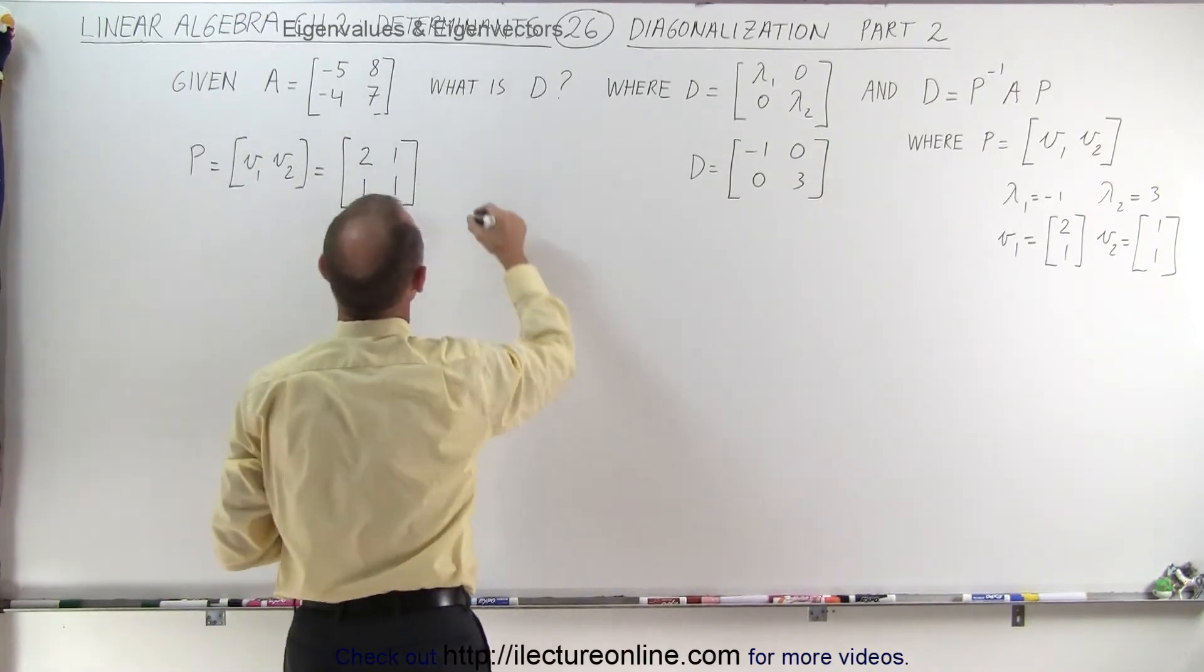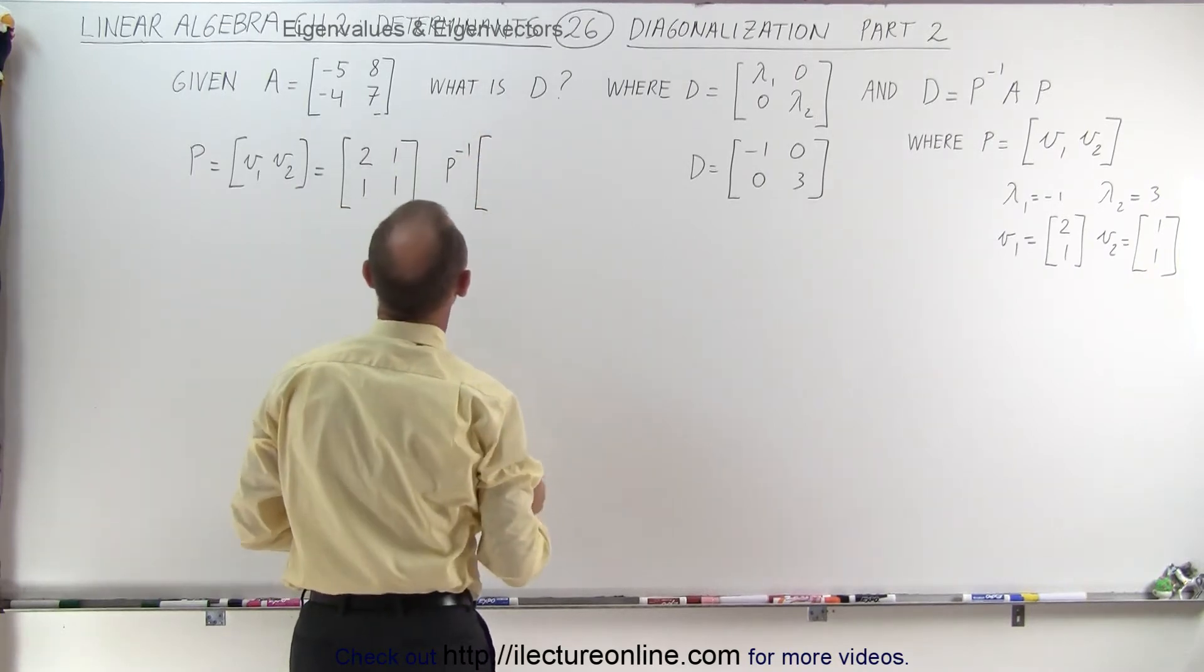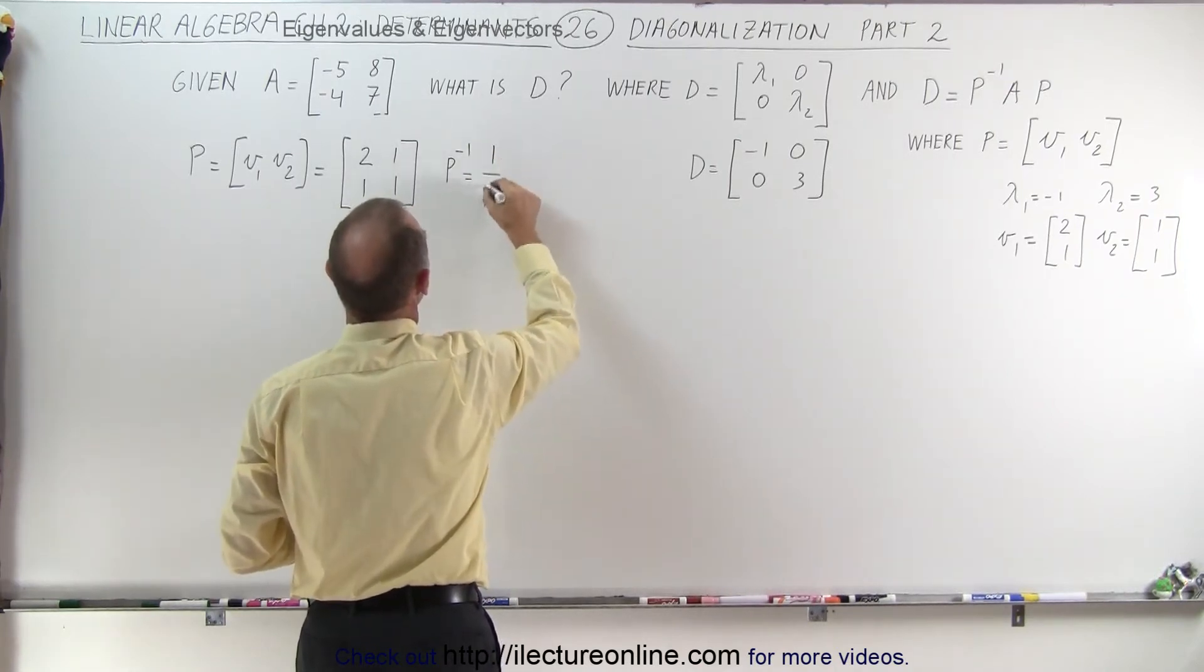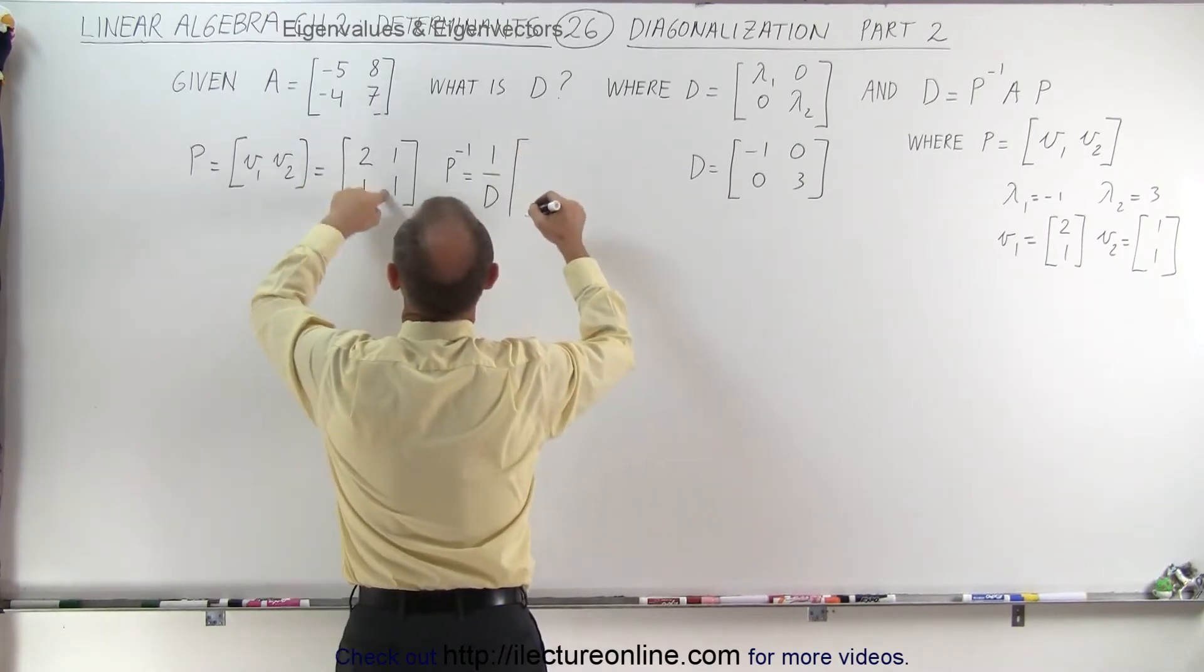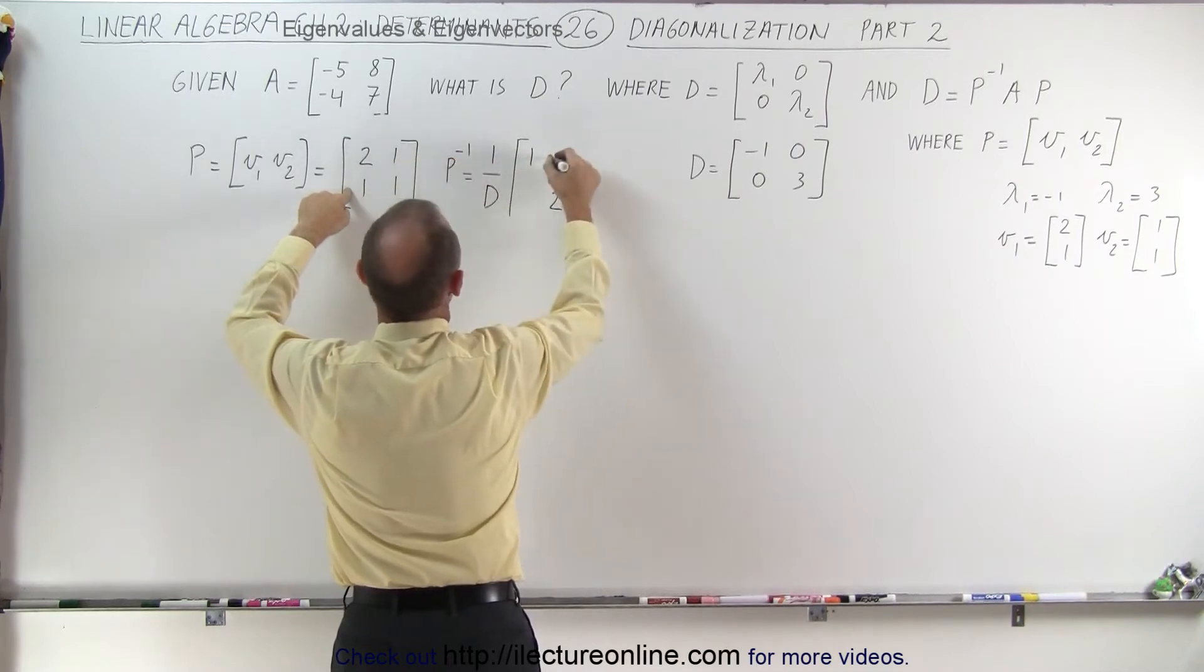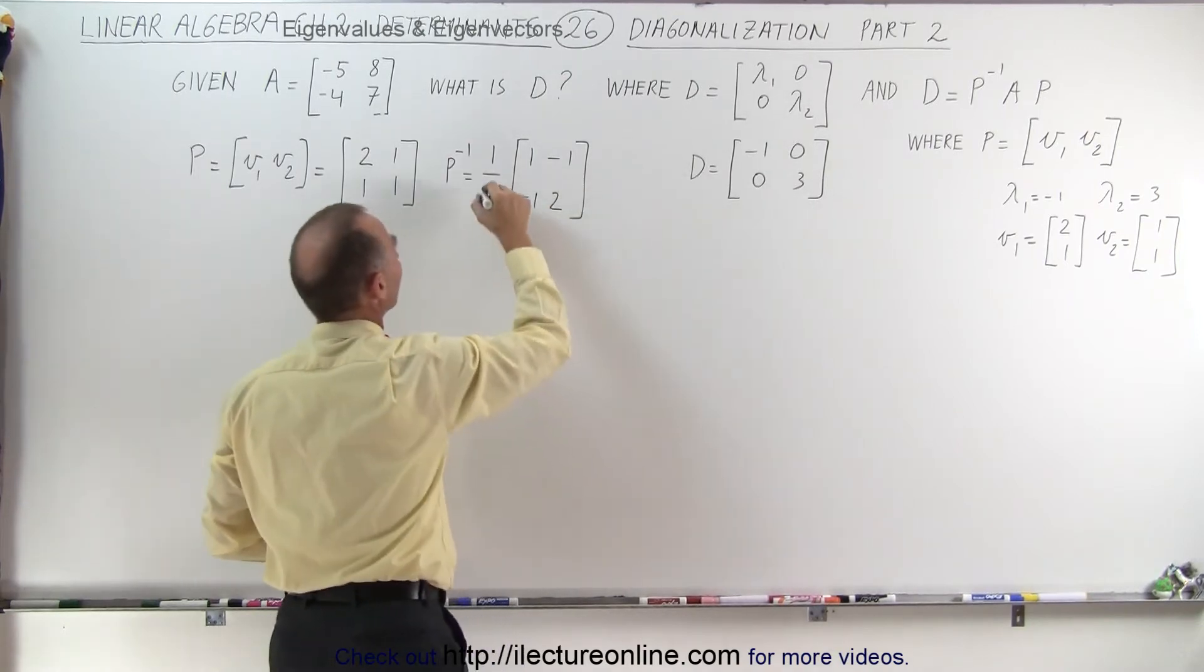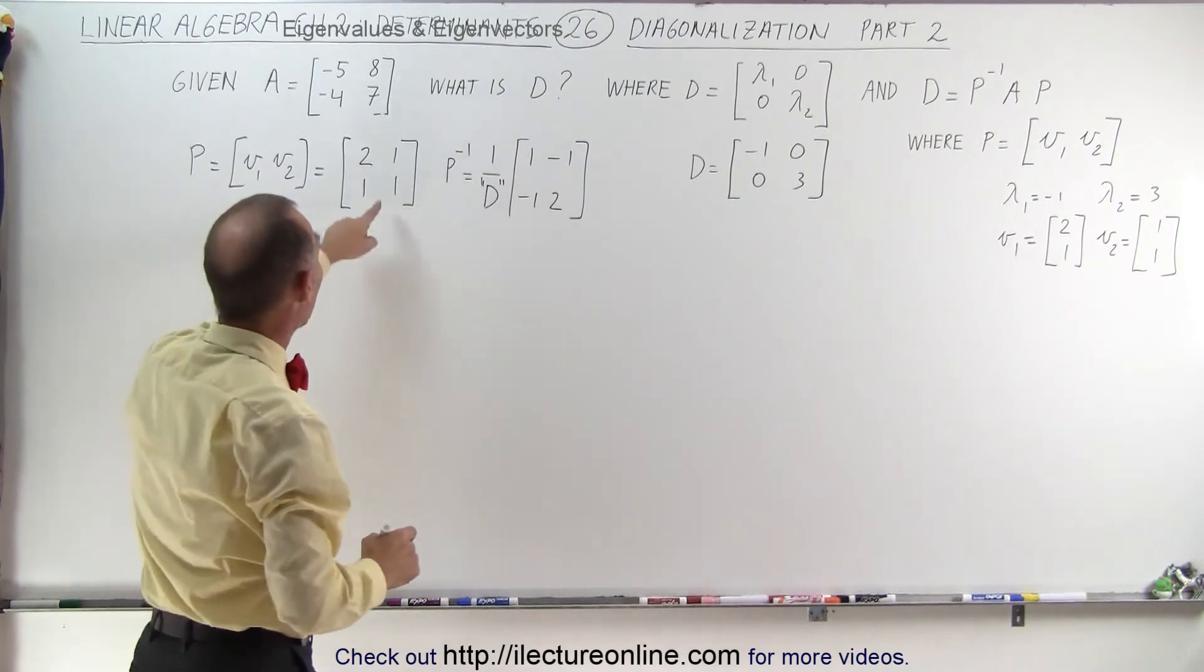So now we want to find the inverse P matrix and the inverse P matrix is equal to 1 over the determinant times—and that would be these two exchange, that would be 1 and 2 and negative signs in front of these two elements, negative 1 and negative 1. Now we have to be careful because this D is not the same as that D. So I'll put that in little quotation marks.